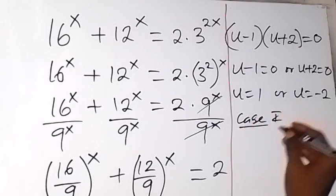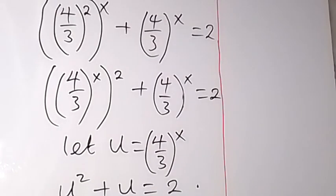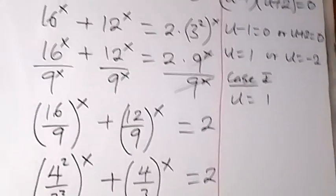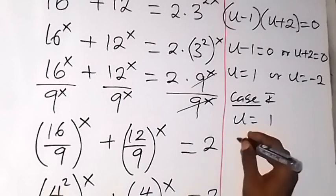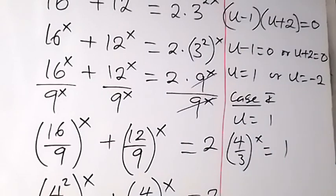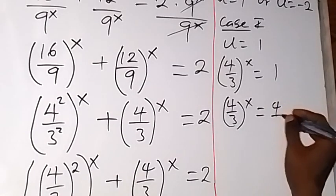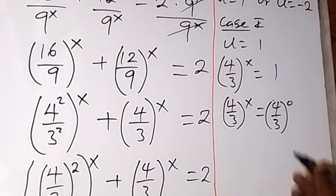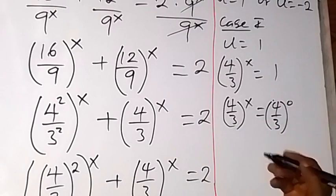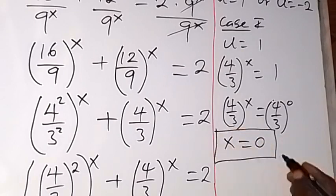For Case 1, where u equals 1: don't forget our u is defined as (4/3) raised to power x. So (4/3) raised to power x equals 1. Remembering that any number raised to power 0 is 1, we can write this as (4/3) raised to power x equals (4/3) raised to power 0. Since the bases are the same, we equate the powers and x equals 0. This is the first value of x.